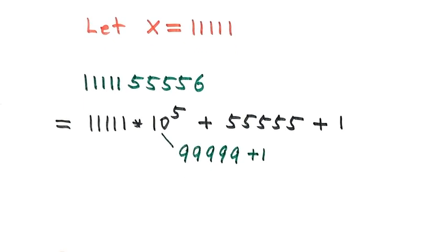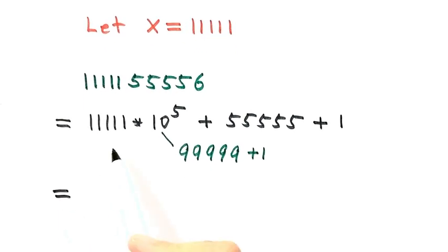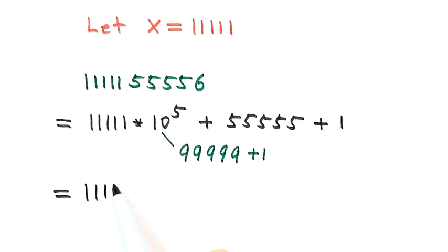So then here, we have five ones times. For five nines, we can write it as nine times five ones, then plus one.